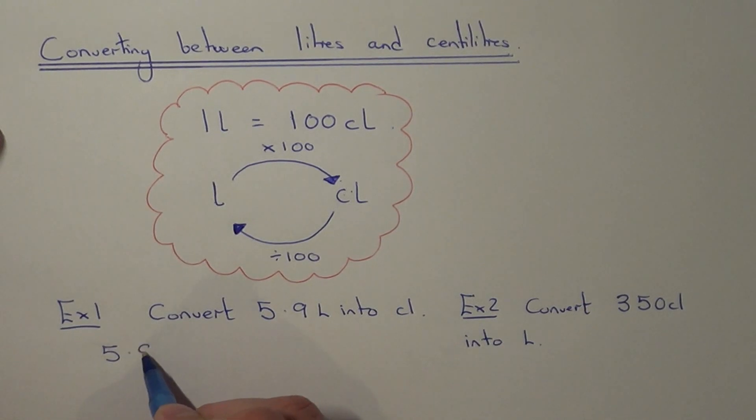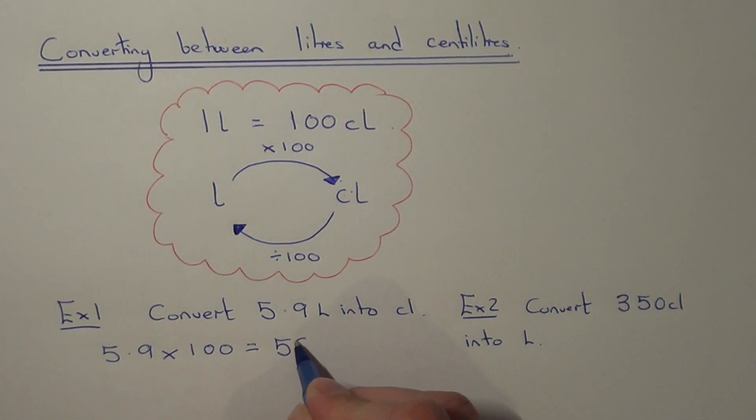So we need to work out 5.9 multiplied by 100. If you work this out, this will give us an answer of 590 centiliters.